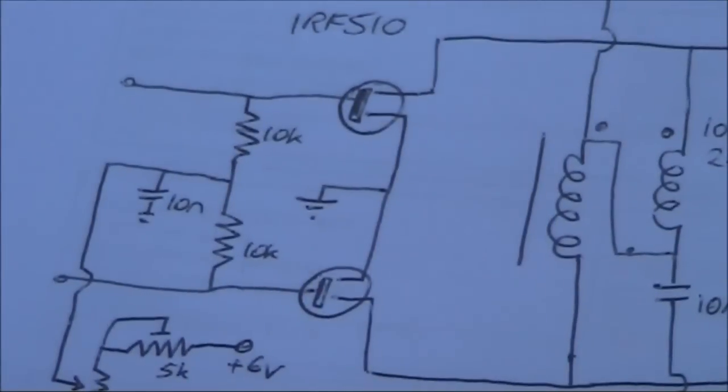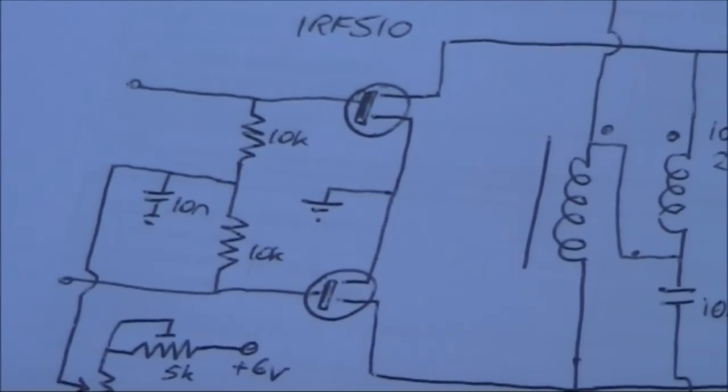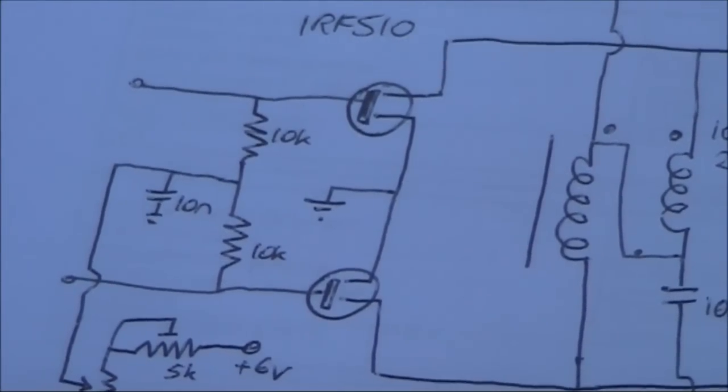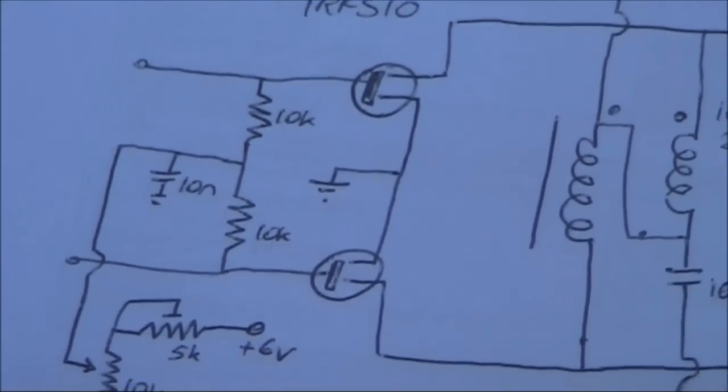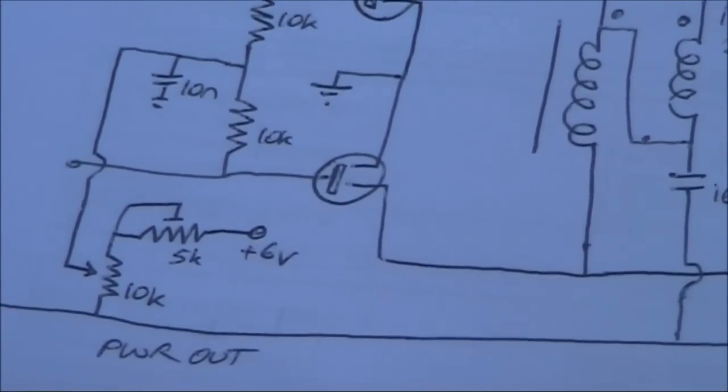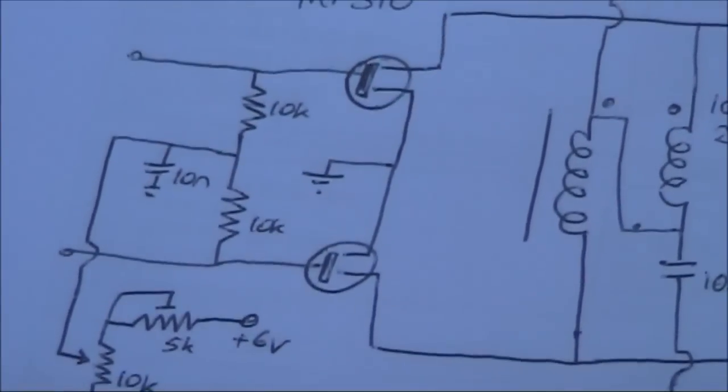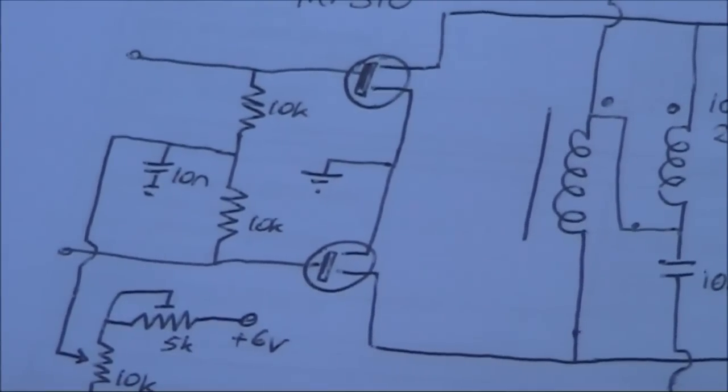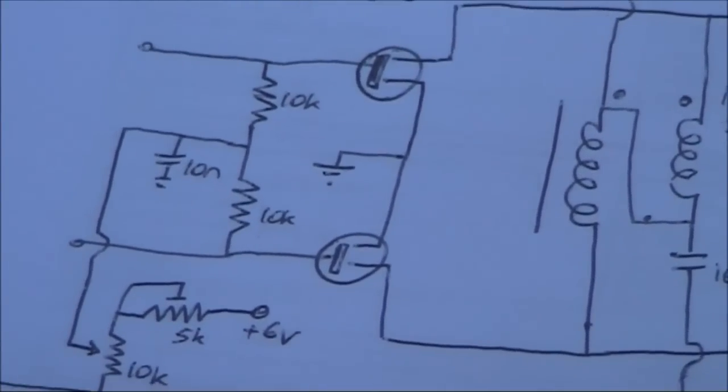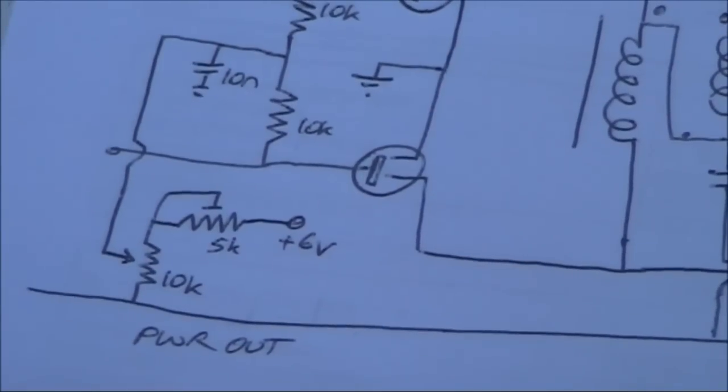Just take a closer look. You've got the two inputs from the outputs of the 74HC04. There's a bias voltage which is applied to both gates of the IRF510s.